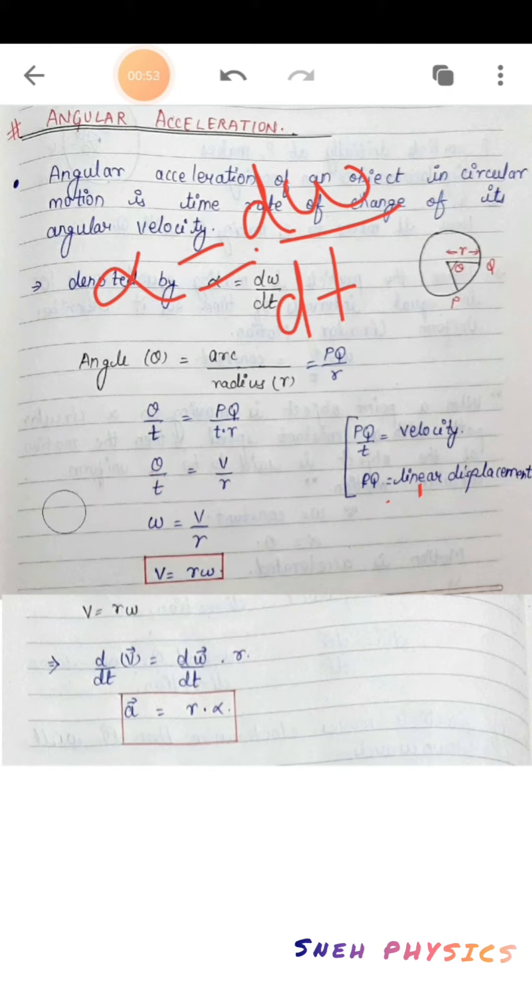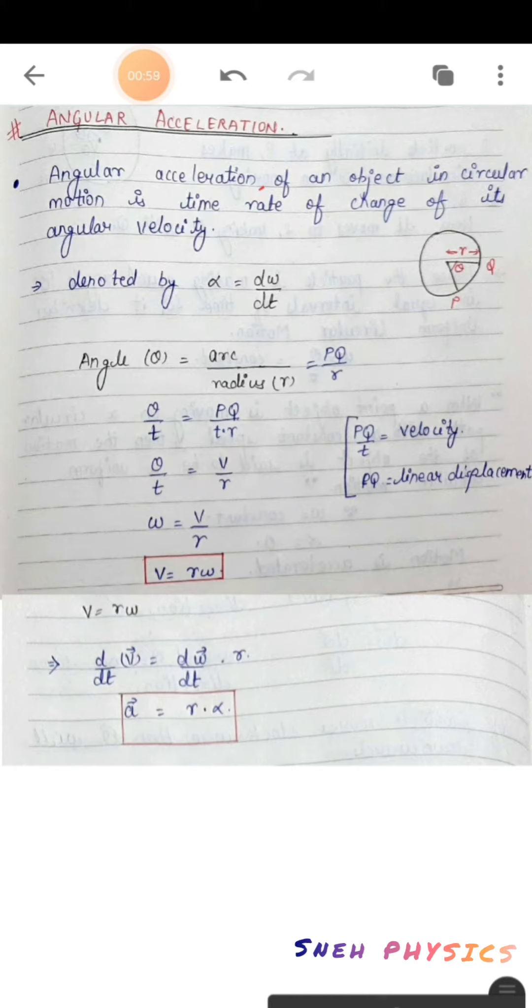Now, what will be the relation of angular velocity and linear velocity? To derive it, we know that theta is given by arc length divided by radius. In this equation, divide both sides by t.